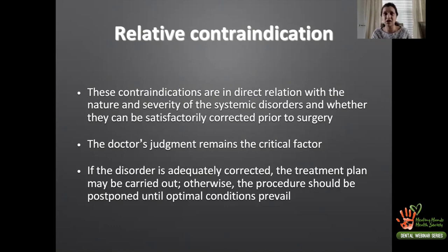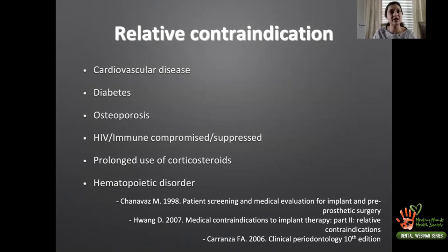Conditions that fall under relative contraindications include cardiovascular disease, controlled diabetes — where we look at HbA1c, and if it is 6 or less we can proceed — osteoporosis, immunocompromised states, prolonged use of corticosteroids, and hematopoietic disorders.